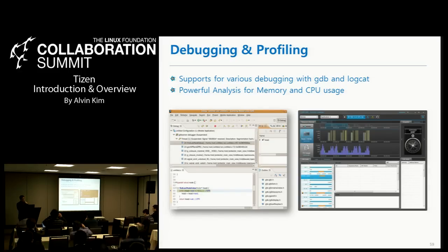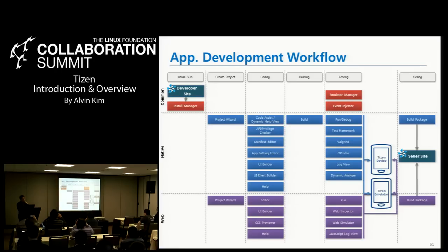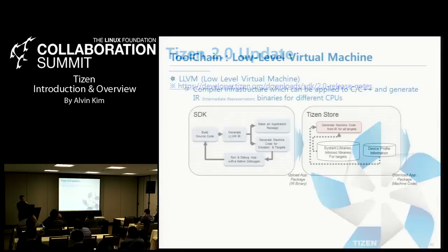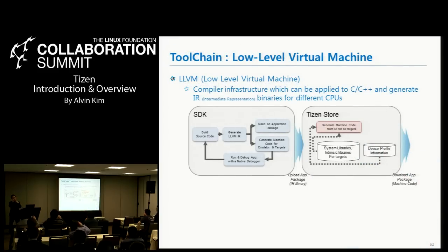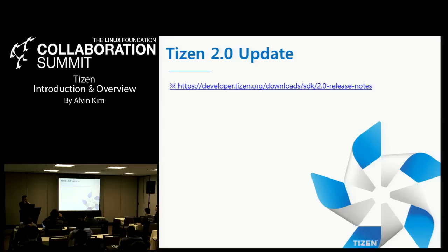We also provide a debugging facility based on GDB, ROCAT, and profiling. You can download and install the SDK from the provided URL. Finally, we provide the LLVM low-level virtual machine toolchain. Because we do not just target ARM CPUs but also x86, by using LLVM technology, once we obtain the LLVM-level intermediate bitcode, that can be translated into machine code later. We are almost done with this framework, and we can later enable multi-binary support.